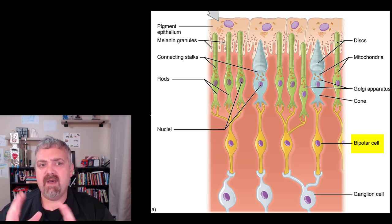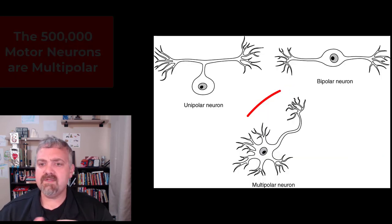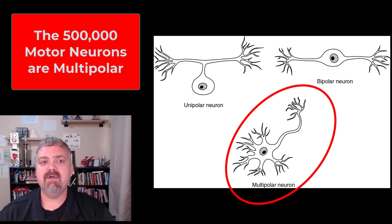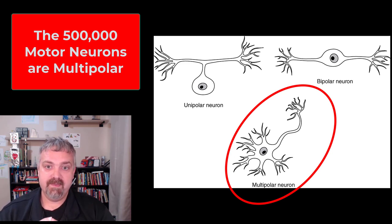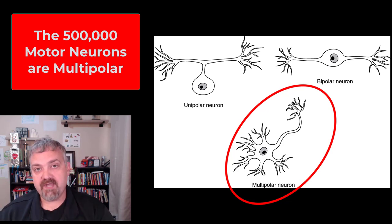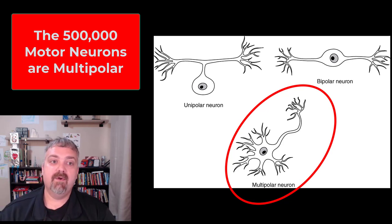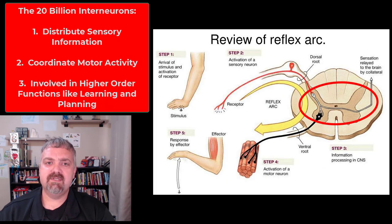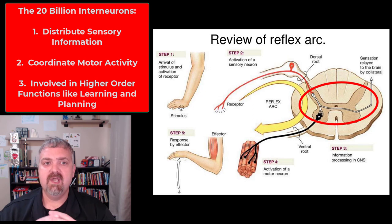Remember that number — we have about 10 million sensory neurons. Back to the multipolar neuron: these are going to be your motor neurons. We have around 500,000 of those. So unipolar and bipolar neurons are both sensory, while multipolar neurons are going to be motor. We talked about how there are 10 million sensory neurons and 500,000 motor neurons.